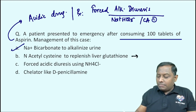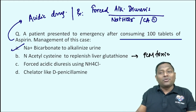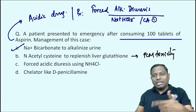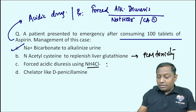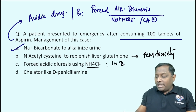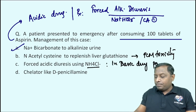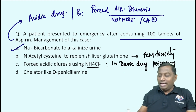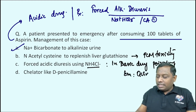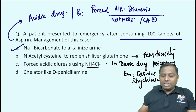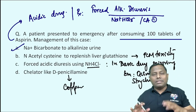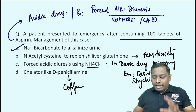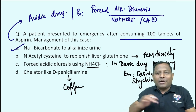Ruling out other options: N-acetylcysteine is mainly used in paracetamol toxicity — it replenishes glutathione stores, a previous PYQ question. Post-acidic diuresis using ammonium chloride is used for basic drug poisoning; basic drugs can be identified by '-ine' in their name, like quinine and strychnine. Chelators like D-penicillamine are used for copper poisoning. The correct answer is sodium bicarbonate for forced alkaline diuresis.